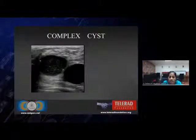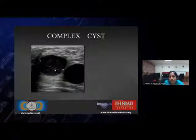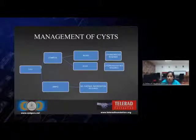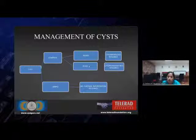Complex cysts, as we know, are cysts with internal contents which could be related to either hemorrhage or proteinaceous material, demonstrating clear-cut internal echoes, septations, and sometimes a solid component. The management of cysts depends upon the internal echotexture. If the cyst is simple, it does not need any further investigation or intervention. If the cyst is complex, on aspiration, if the contents turn out to be blood, cytopathology is required. If it turns out to be a fluid or straw-colored fluid, then there is no need for cytopathology.